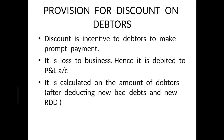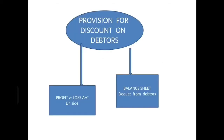How is provision for discount on debtors calculated? It is calculated on the amount of debtors after all other adjustments — after deducting new bad debts and new RDD. The final amount you arrive at — on that you calculate provision for discount on debtors. Two effects: it is a loss, so profit and loss account debit side; and the second is balance sheet — deduct from debtors.